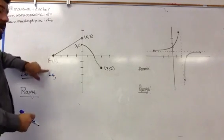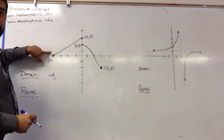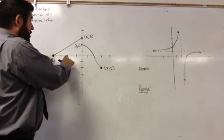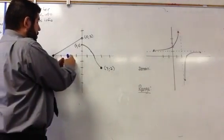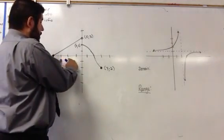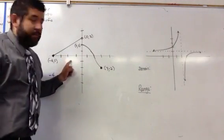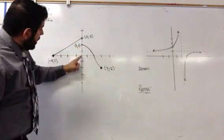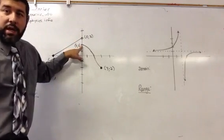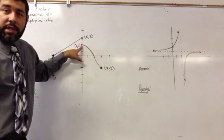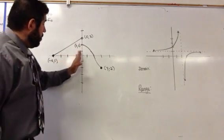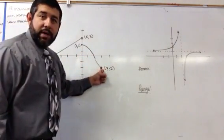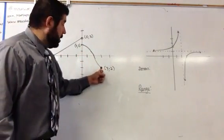So if we start at negative 4 and then we continue, we'll notice that all of these x values are on the graph — all of these x values, even x equals 0 because this is shaded in. And we're going to continue to go, and our largest x value is 3.